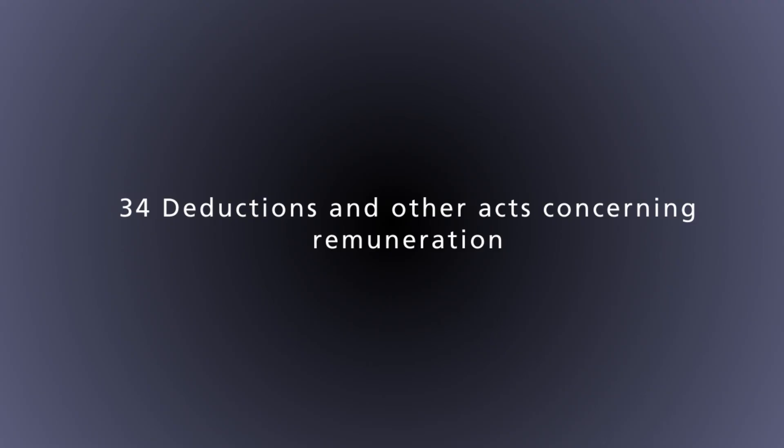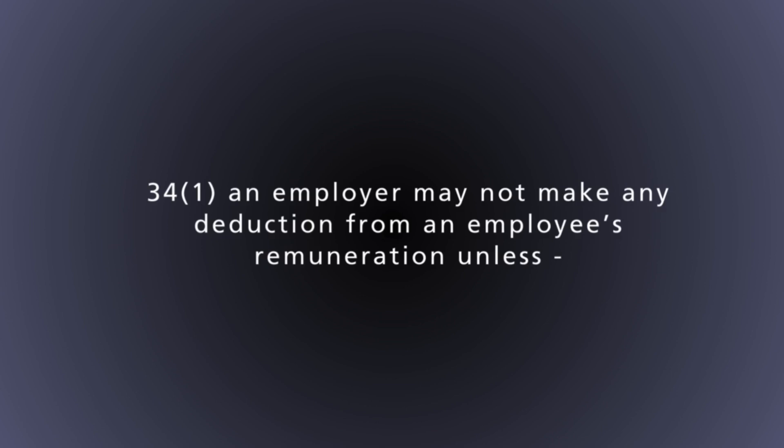Now let's get into the details about deductions. I'm going to go through Section 34 starting at the top and working through every single clause. Section 34 of the BCEA is 'Deductions and Other Acts Concerning Remuneration.' The first clause lays out that there are only two ways in which an employer can make a deduction from an employee's remuneration. If a deduction does not fall under one of these two, it is not a fair deduction.